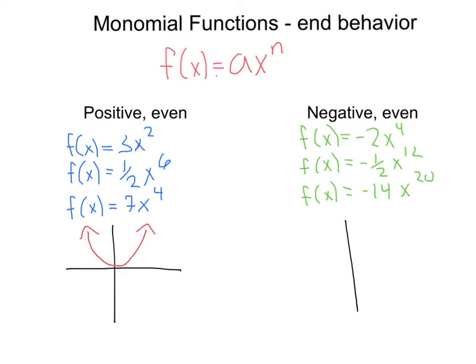When we have a negative a with an even exponent, like negative 2x⁴, negative ½x¹², negative 14x²⁰, the arrows are both going to be going in the same direction once again, except they're going to be going downwards, as their end behavior is going to be towards negative infinity.